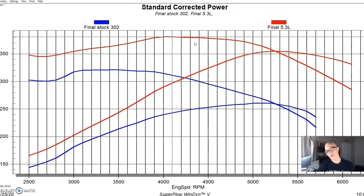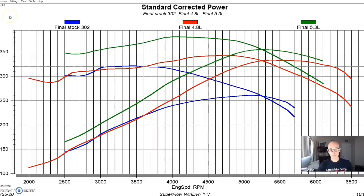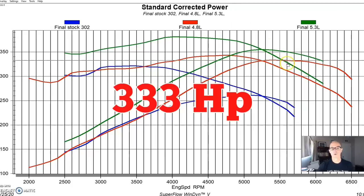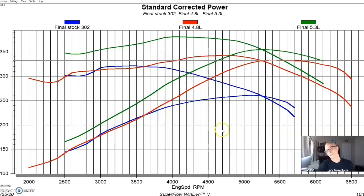Nobody would just put in a stock LS - you would at the very least put a cam and springs in it. An LS motor compared to the factory 5-liter weighs less, has a composite intake, has aluminum heads, it's just a much better combination objectively speaking from a performance standpoint. Even if we just looked at the 4.8, the 4.8 makes as much torque as the bigger 5-liter does but still makes a lot more horsepower - 333 horsepower and 343 foot-pounds.